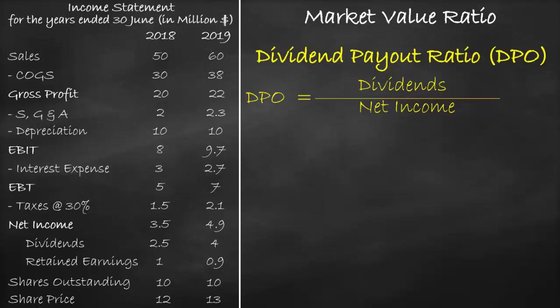So let's calculate the dividend payout ratio for the year 2018. Dividends equal $2.5 million divided by net income of $3.5 million, which equals 71.43%. The unit of dividend payout ratio is a percentage.